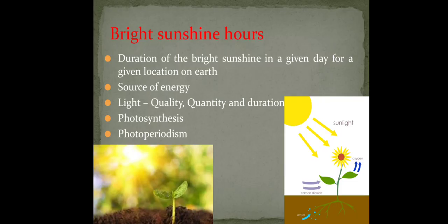First of all, what do you mean by bright sunshine hours? It is the duration of the sunlight or bright sunshine received in a particular day at a particular location. That will be expressed in hours — how many hours of sunshine you are receiving in a particular day.